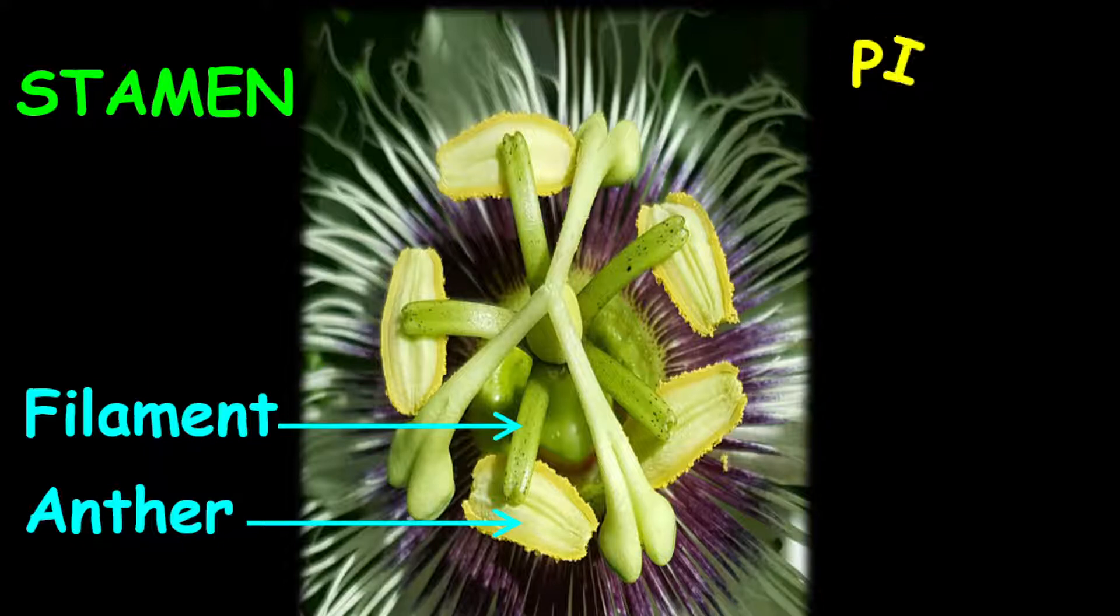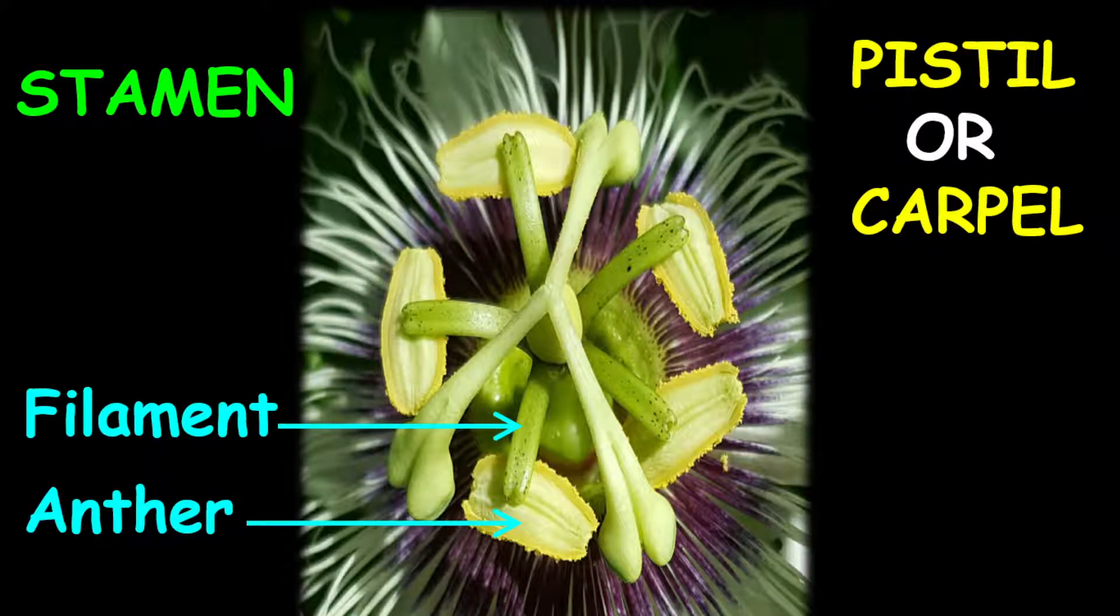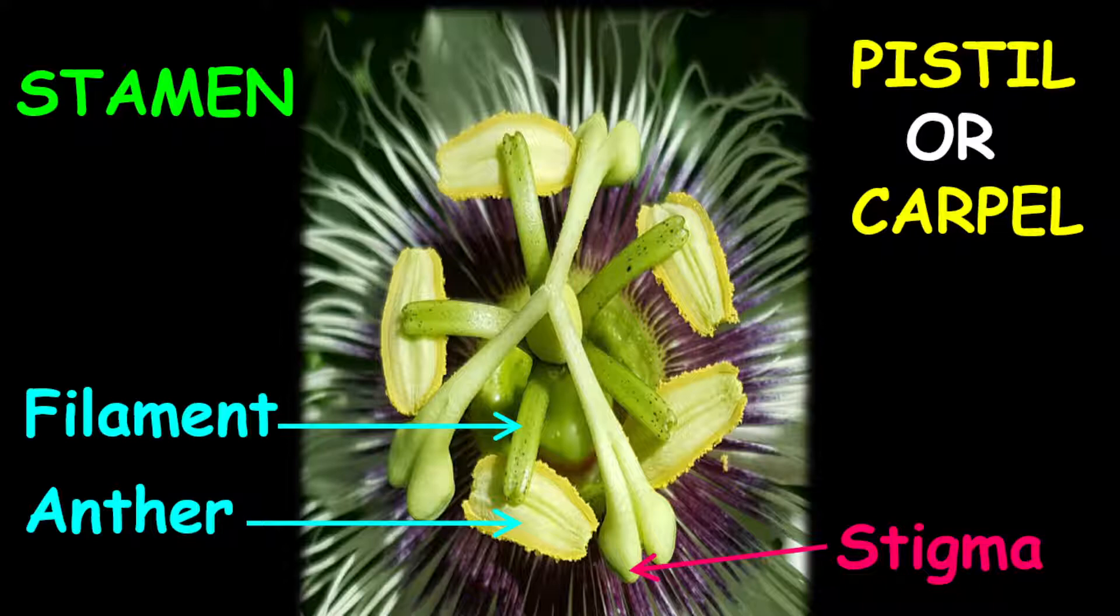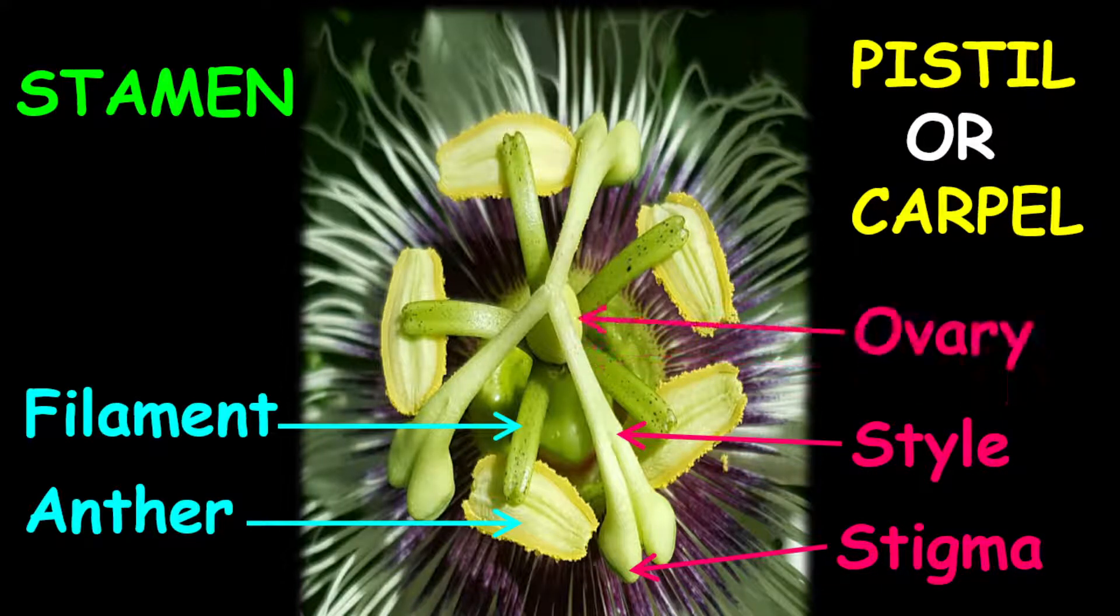We also have the female part of the flower, which is called the pistil or the carpel. The female part is made up of the stigma, the style, and the ovary.